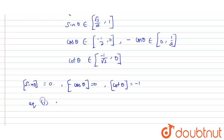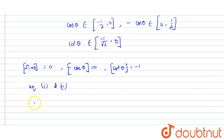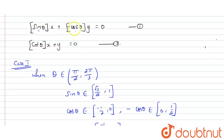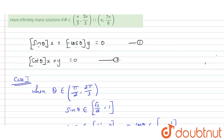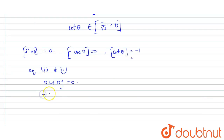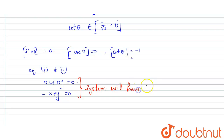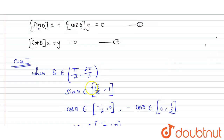Substituting into equations 1 and 2: Equation 1 becomes 0·x + 0·y = 0, which is always 0 = 0. Equation 2 becomes -x + y = 0. From this condition, the system has infinitely many solutions.